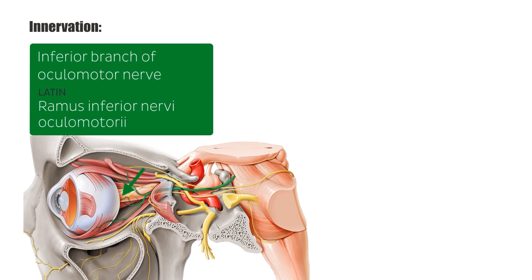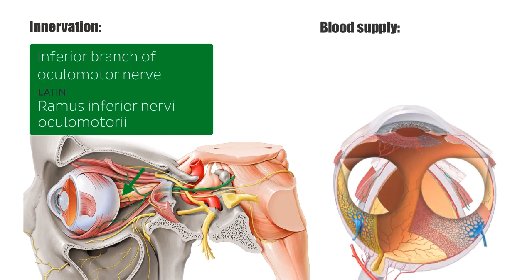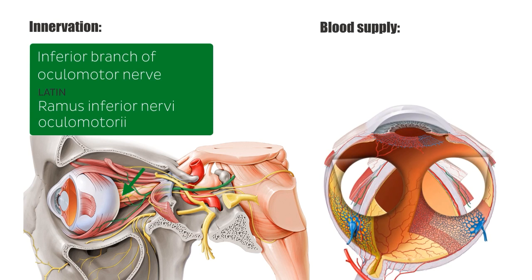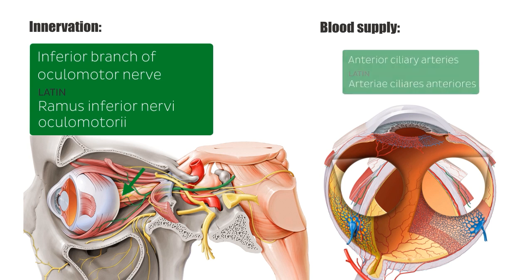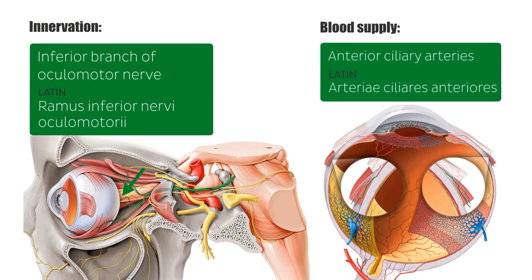The medial rectus muscle receives arterial blood supply from two branches of the anterior ciliary arteries, which are derived from the ophthalmic artery. In this image, only one of these branches is visible, indicated here.